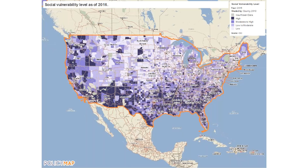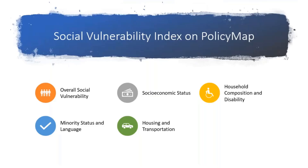Here is a sample map showing the overall social vulnerability level. It also includes minority status and language, socioeconomic status, housing and transportation, and household composition and disabilities as subcategories.